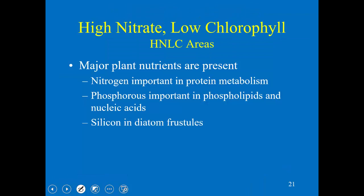These areas are called High Nutrient Low Chlorophyll — HNLC regions. The only complication is that in some areas of the Southern Ocean, silicate is also low, which is a more complicated story. But in these HNLC regions, all the major nutrients are present — nitrogen, phosphorus, and also silicate.